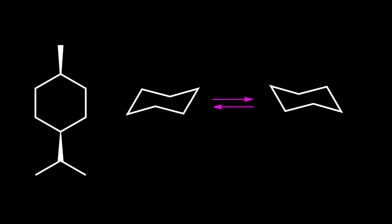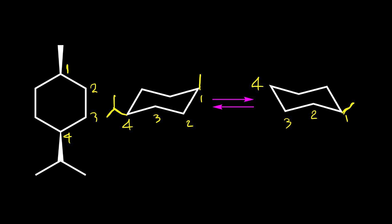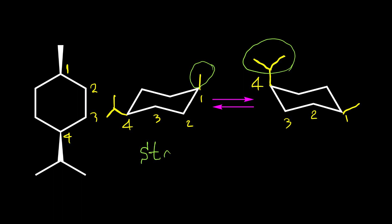Here is the next example. We have a cis one and four relationship between methyl and isopropyl. For cis one and four, we should have one axial and one equatorial. I'll put methyl on axial and isopropyl on equatorial. When we have ring flip, methyl becomes equatorial and isopropyl becomes axial. In each conformer we have one axial and one equatorial group. In the first conformer methyl is axial; in the second, the much larger isopropyl is axial. The repulsion for isopropyl is far greater than for methyl, so the first conformer with methyl axial is more stable.